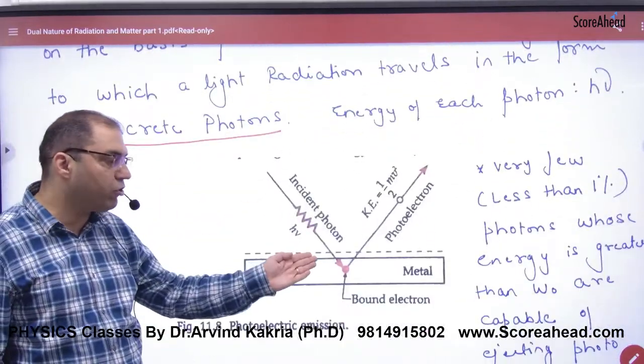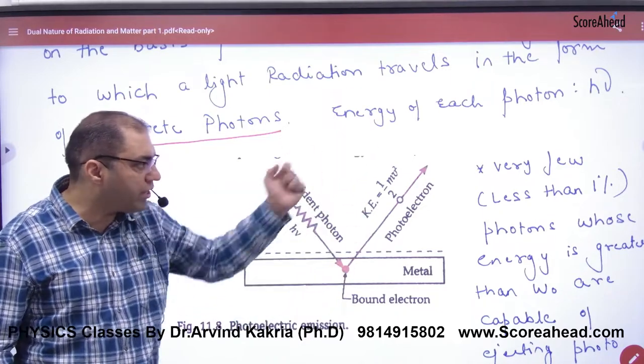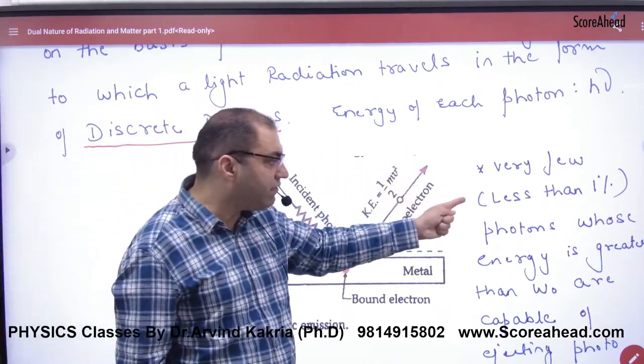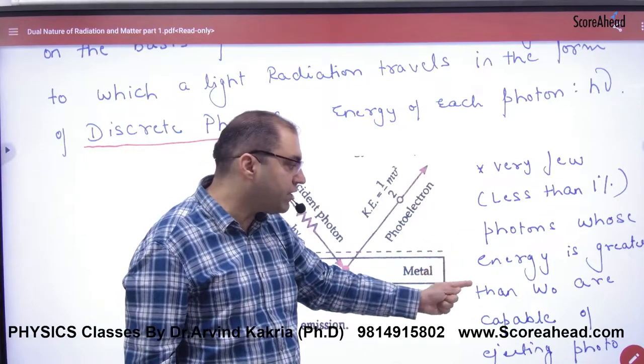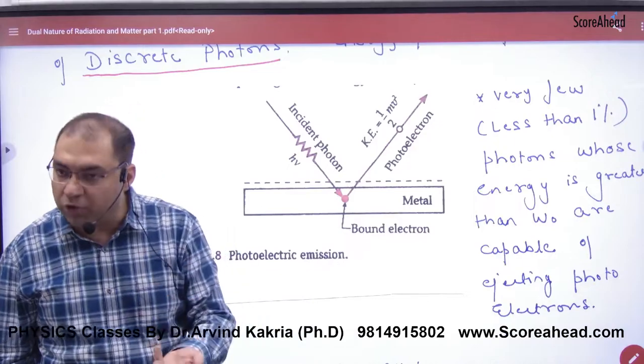For an incident photon with energy H-nu, very few—less than 1% of photons whose energy is greater than the work function—are capable of ejecting photoelectrons.